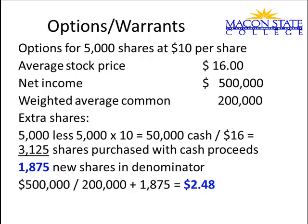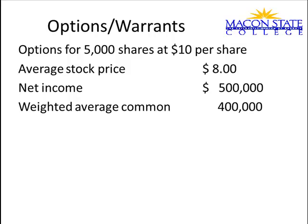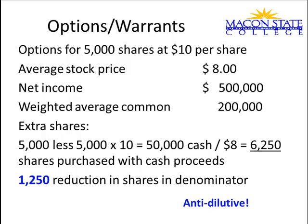Is this dilutive or anti-dilutive? You need to compute basic earnings per share. The basic earnings per share is $2.50, so this is dilutive because EPS went down. Now I'll change the average stock price — freeze this frame, work it, and then check your work. With the new stock price, you could buy 6,250 shares with the cash those exercising their options would give you, which is more than the shares you had to issue. So the denominator would have fewer shares, meaning earnings per share would go down since there's no change to net income.